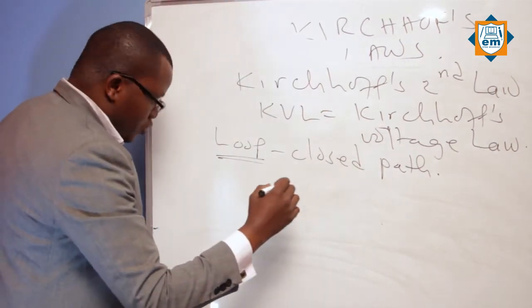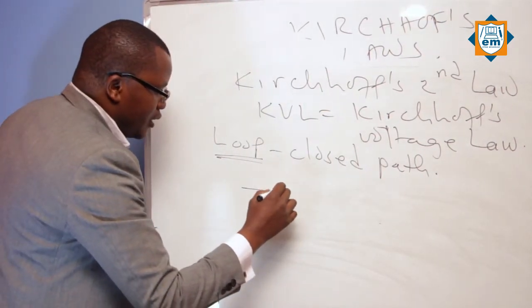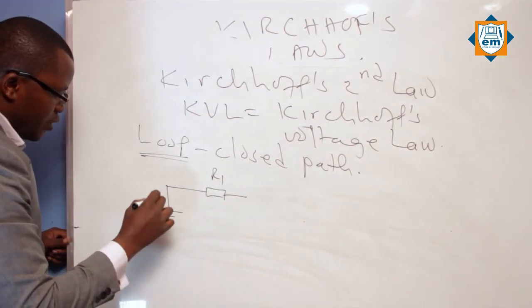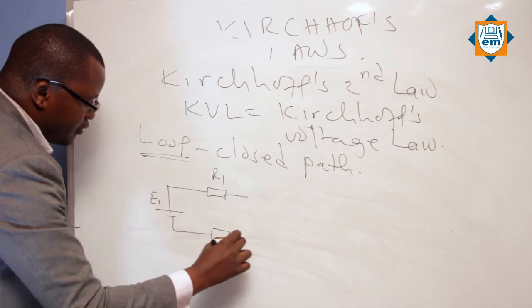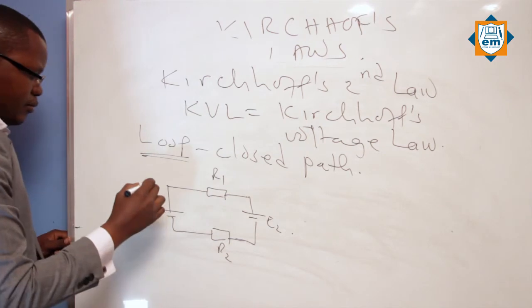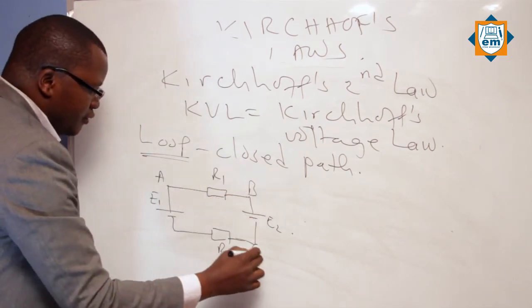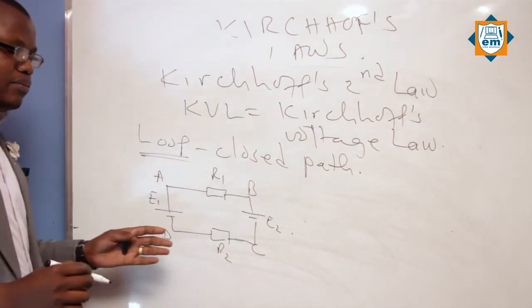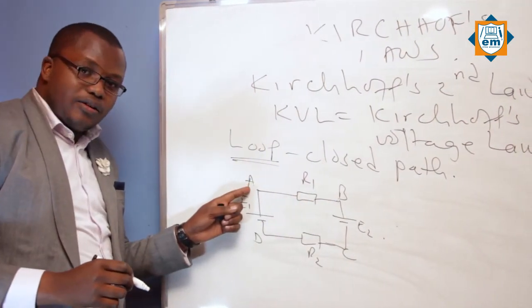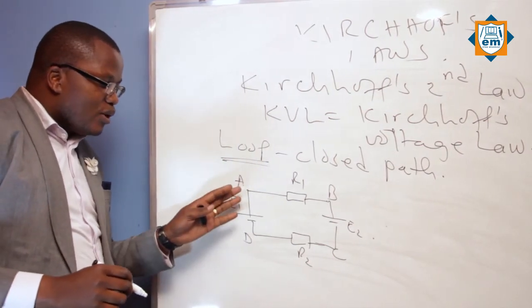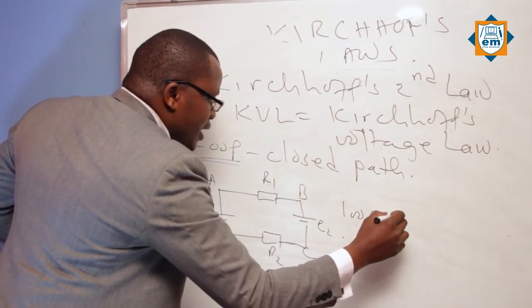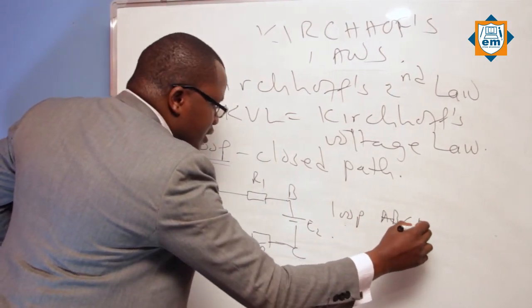Kwa hiyo, nikichora mfano sakiti yangu hapa — chukua: E hapa ni resistor R1, nina battery hapa, this is E1. I have another resistor R2, na nina battery lingine hapa, this is E2. Naomba ni-label: A, B, C, D. Kwa hiyo nikuambie nitaje jina la loop, nitasema loop A, B, C, D, A. Loop yangu ni ABCDA.